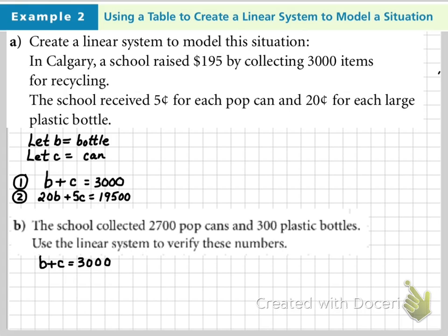So, the school collected 2,700 pop cans and 300 plastic bottles. Let's verify this. Well, in my first equation, B plus C is 3,000.